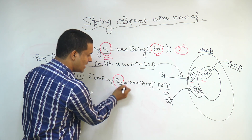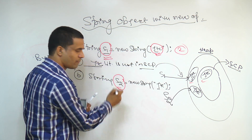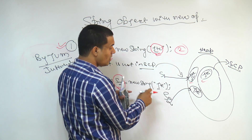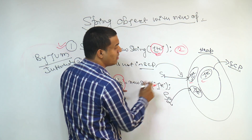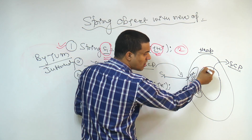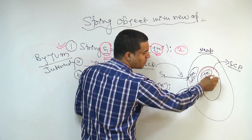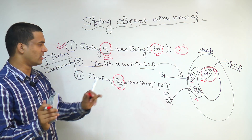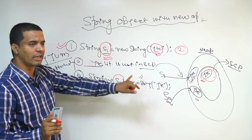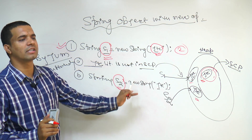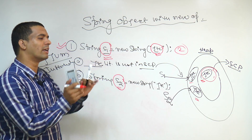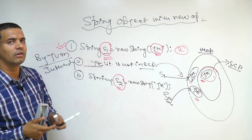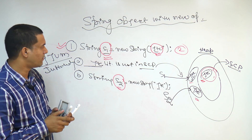When we talk about S2, if the literal is already there inside the pool, it is not creating a new one inside the pool — it is creating only outside the pool. So, hopefully it is clear how objects are created inside the pool or outside the pool. We will also cover concatenation next.